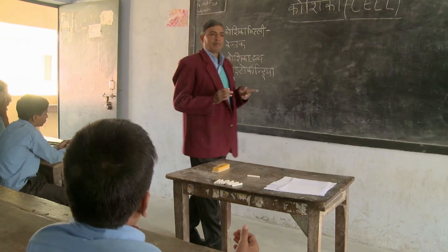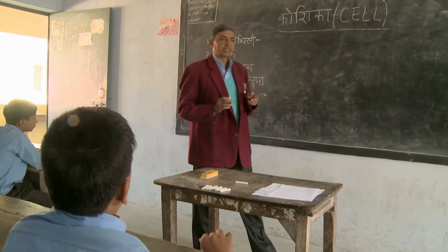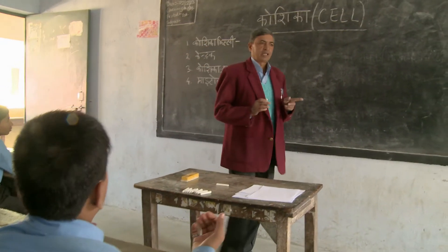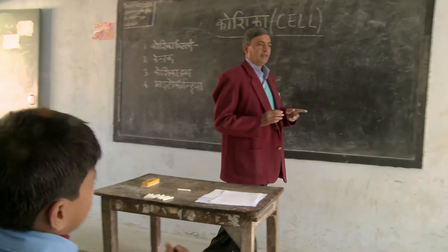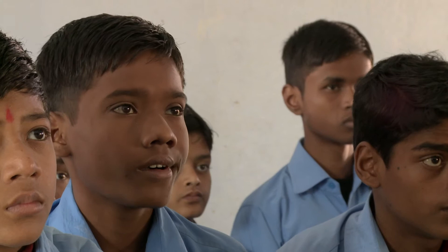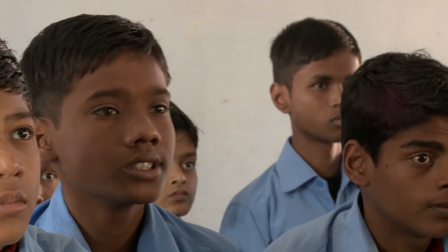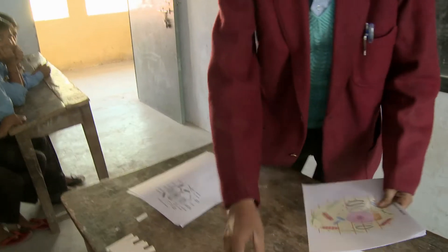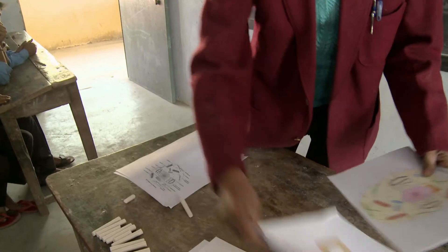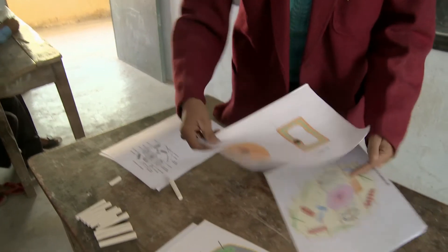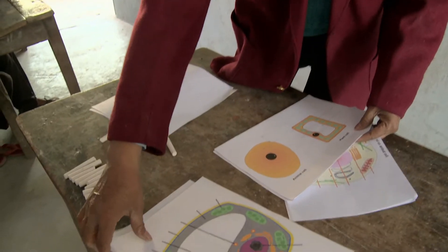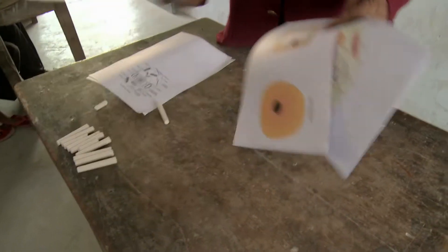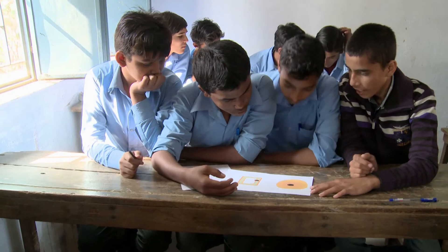In this secondary science lesson, the teacher reviews the characteristics of cells. He has divided the class into groups according to their attainment level and distributed differentiated worksheets.